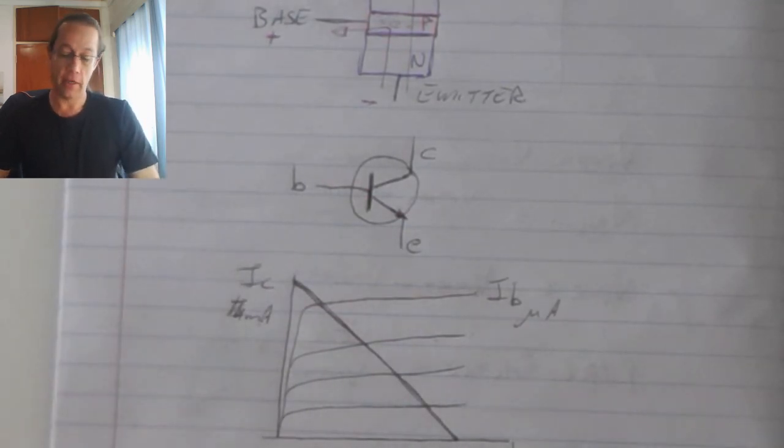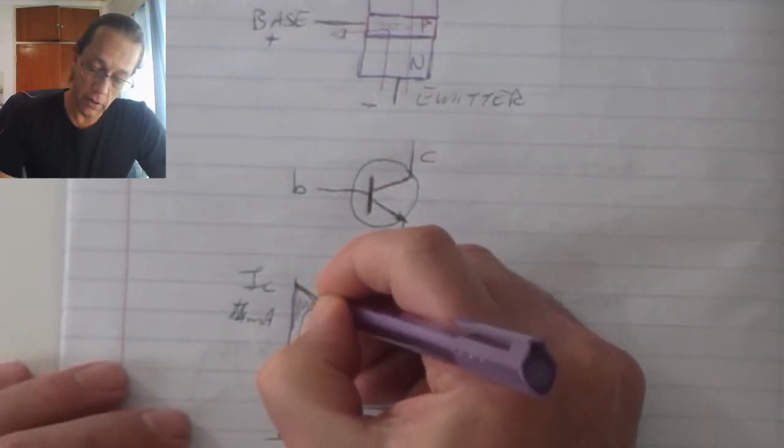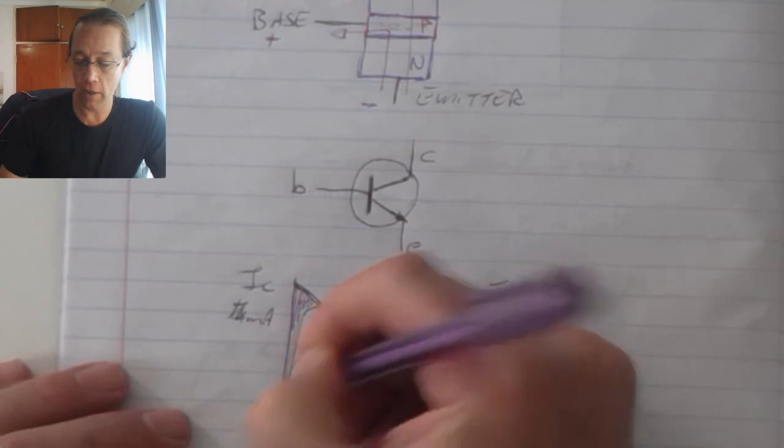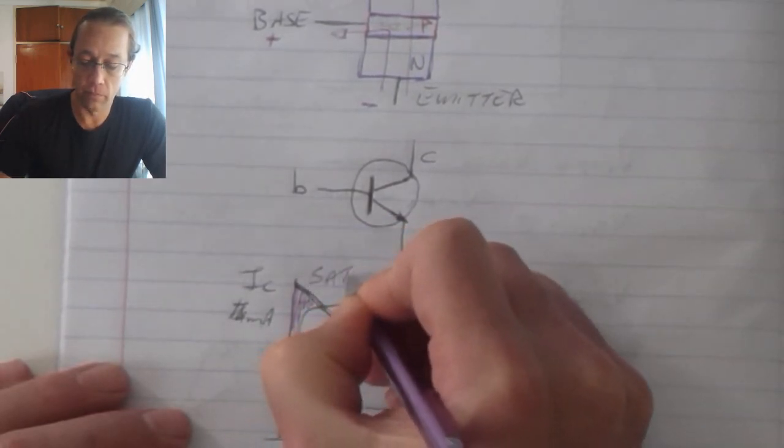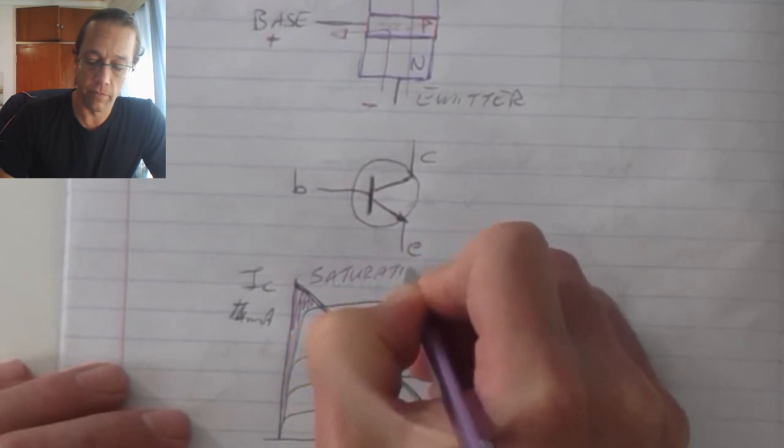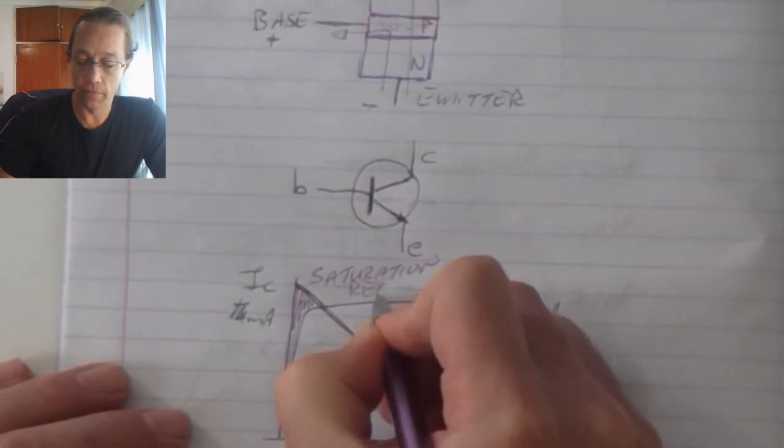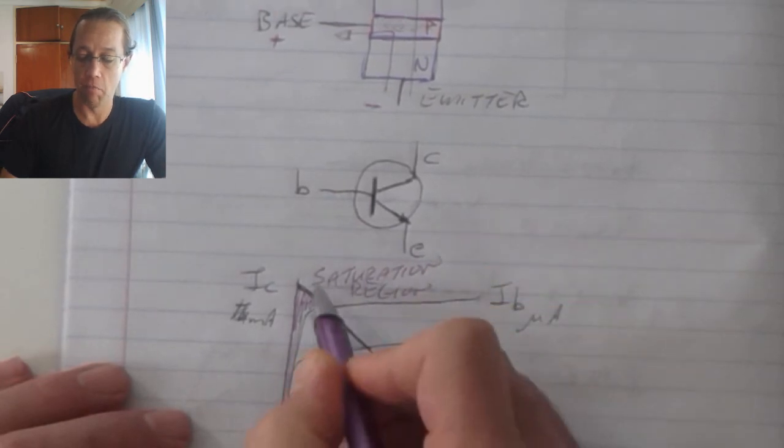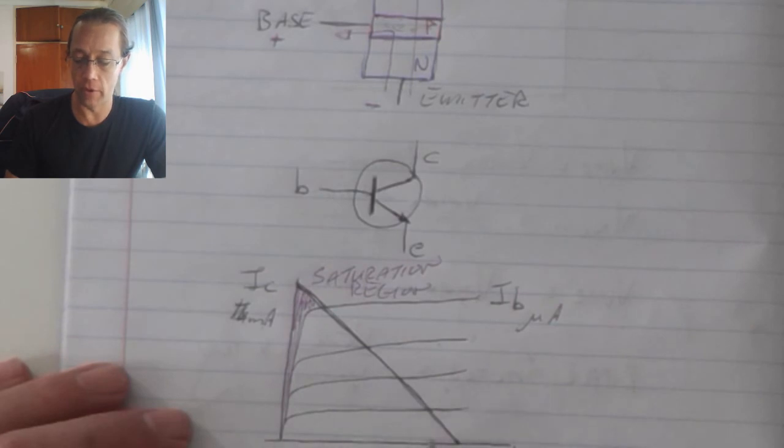Now the transistor has three areas of operation. The first area, that one over there, that is my saturation. And at the saturation region, we will have maximum amount of current flow and a minimum amount of voltage generated.